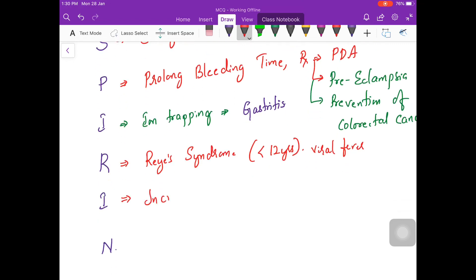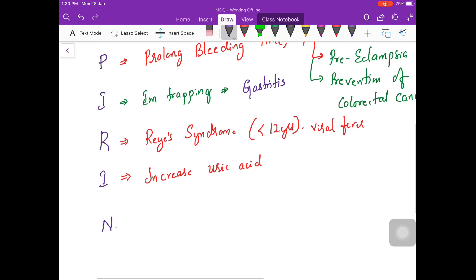Now one more I stands for increased. Now what does aspirin increase when it is given at therapeutic dose? It increases uric acid. So what is the take home message? So it is not used in gout. So only NSAID that is not used in gout is aspirin. One more I is it is an irreversible COX inhibitor.